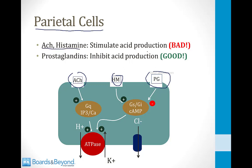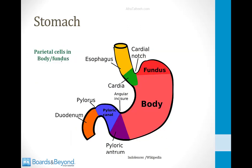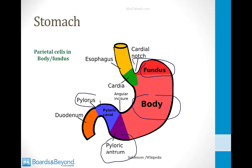Acetylcholine and histamine stimulate acid production, which is bad from the point of view of gastritis. Prostaglandins, on the other hand, inhibit acid production, which is good. These concepts will be important as we discuss the various causes of acute gastritis. Parietal cells that secrete acid are found in both the fundus and the body of the stomach, and are usually not found in the antrum, the portion right before the pylorus.